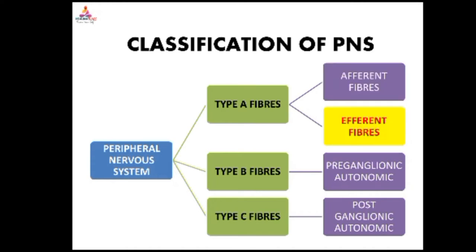Efferent fibers are motor subgroups. Motor neurons are the efferent fibers, mainly alpha fibers, beta fibers, and gamma fibers. Alpha fibers supply extrafusal muscle fibers. Beta fibers also supply extrafusal muscle fibers and muscle spindles. Gamma fibers supply intrafusal muscle fibers of the muscle spindles.